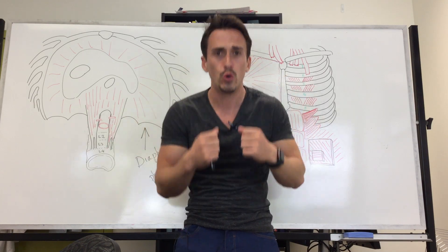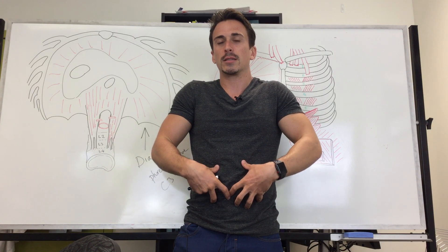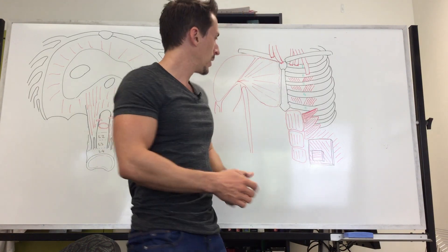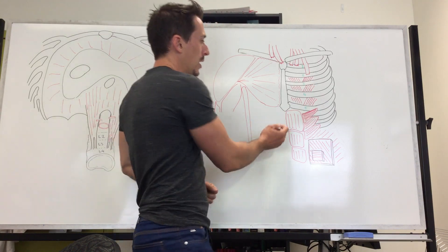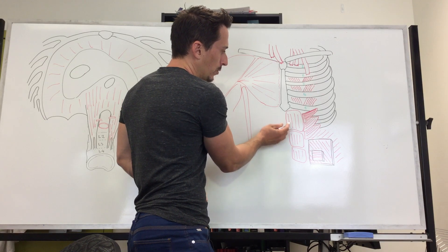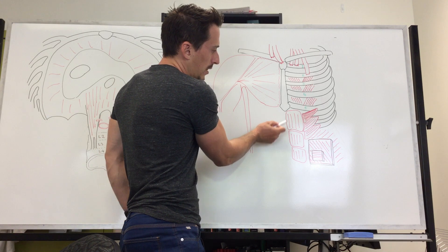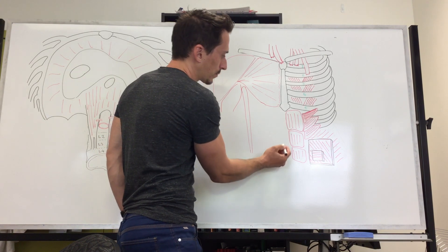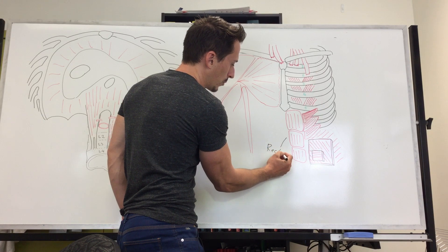Breathe out forcefully. The first thing you notice is your abdominals are contracting. So let's have a look at what abdominal muscles are involved. First is the rectus abdominis. Rectus means straight, and you can see that these abdominal muscles run straight up and down.